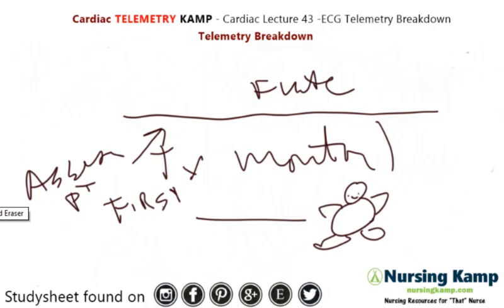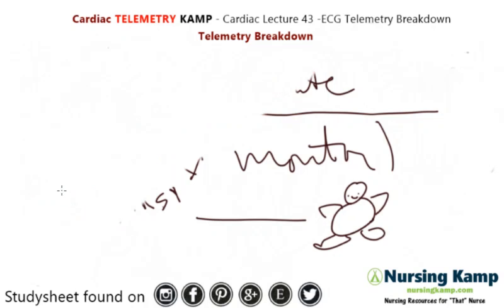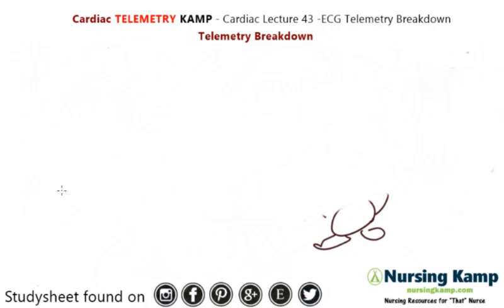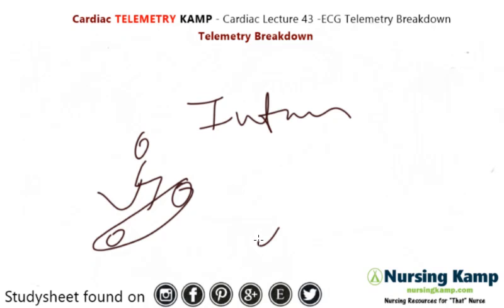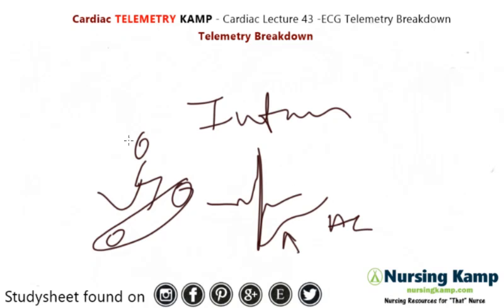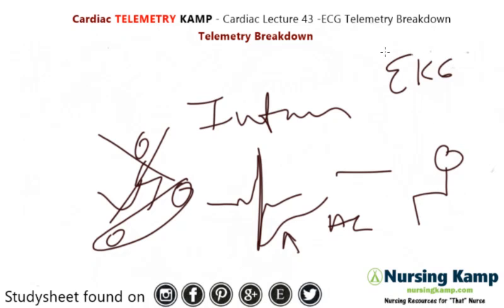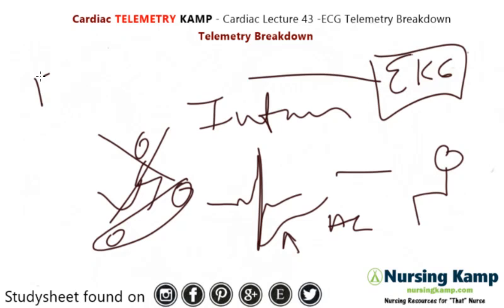For example, if a patient is admitted with myocardial infarction and there's an ST elevation, they're telling you there's an infarction. Or if a patient is on a treadmill and you see an ST depression — which is on the acute side — they need to stop what they're doing and sit down, and you need to get an EKG.